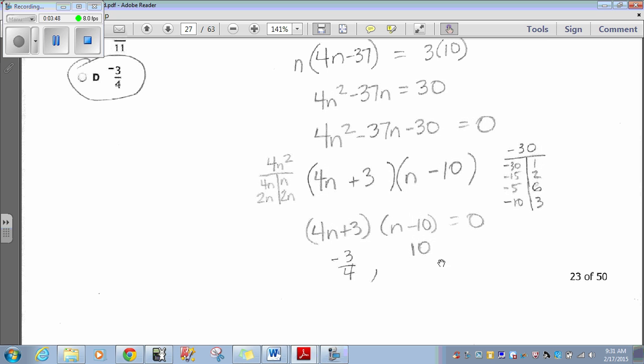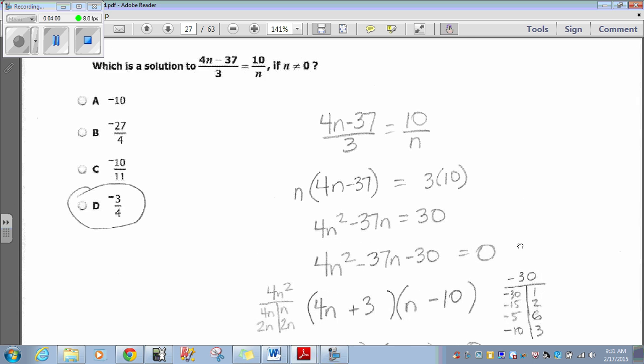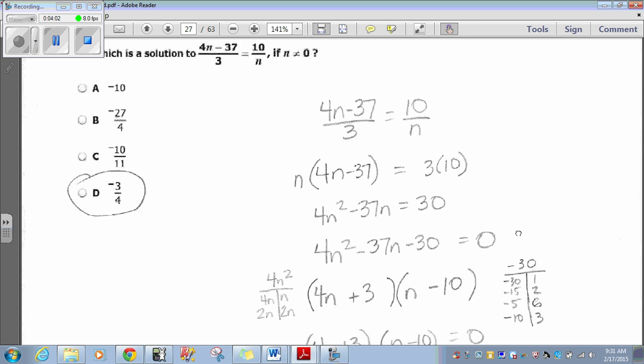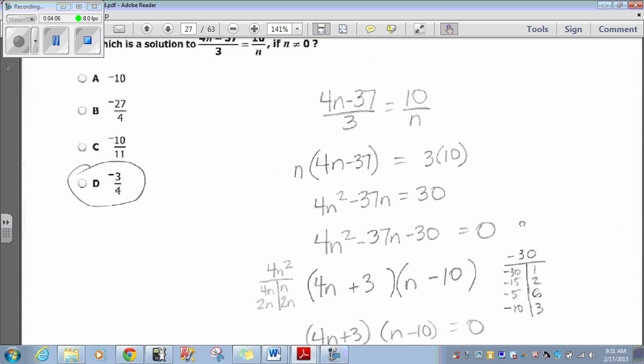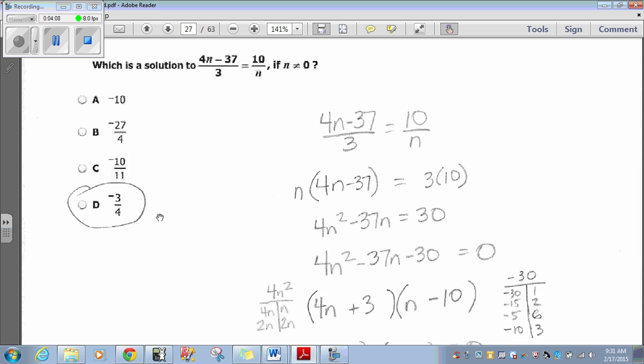So, these two work. N minus 10 is 0. So, 10 is the answer here. That's easy. 4N plus 3 equals 0. When you work it out, N is negative 3 fourths. So, negative 3 fourths and 10 would be our answers and not A because A says negative 10. We have a positive 10. Negative 3 fourths.